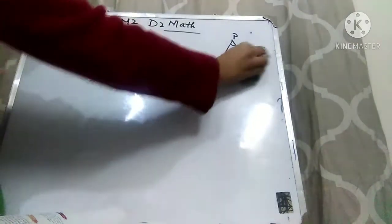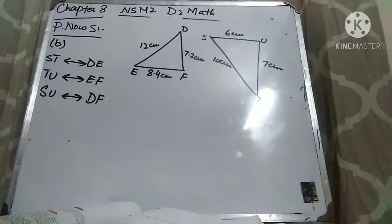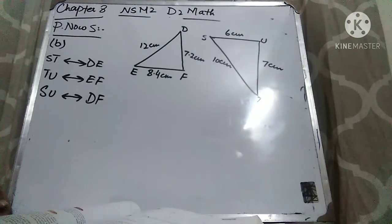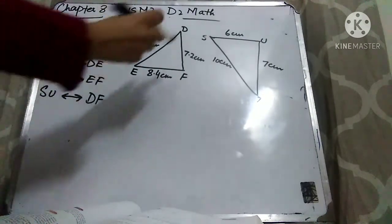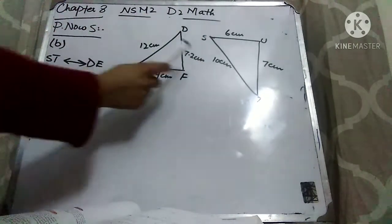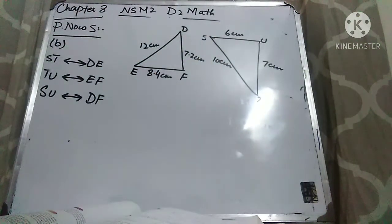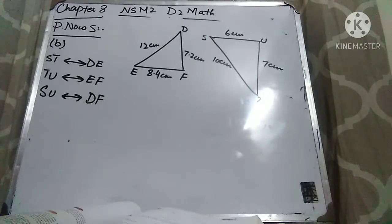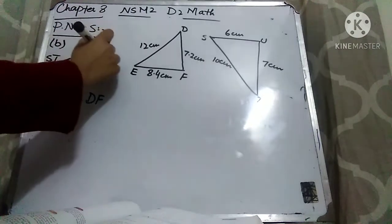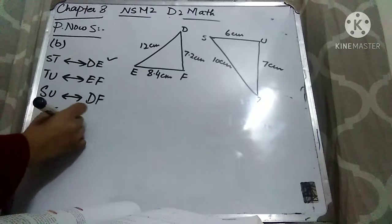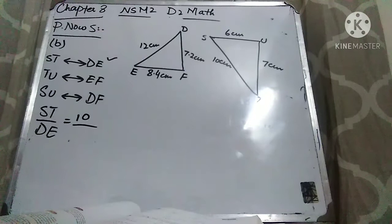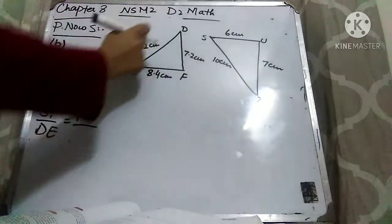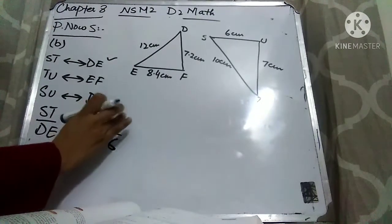We have to find out the corresponding sides. The corresponding side of ST is DE, the corresponding side of TU is EF, and the corresponding side of SU is DF. So now we are going to find out the ratios to determine whether the figures are similar or not. The ratio ST over DE: the measurement of ST is 10 and DE is 12. Simplifying 10 over 12 gives 5 over 6, so ST to DE is 5:6.